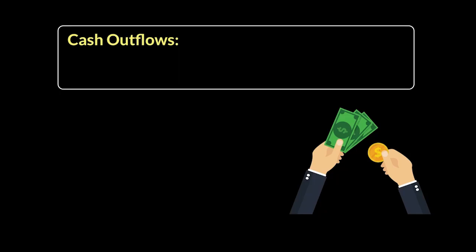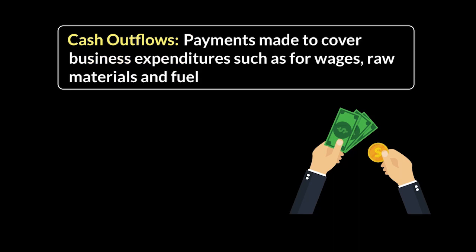The second part of our cash flow forecast looks at the outflow of cash that happens in the everyday running of a business, and those come in the form of cash outflows. Cash outflow is cash going in the other direction, meaning any payments that the company has to make to cover everyday business expenses — things like wages, raw materials, and buying fuel.